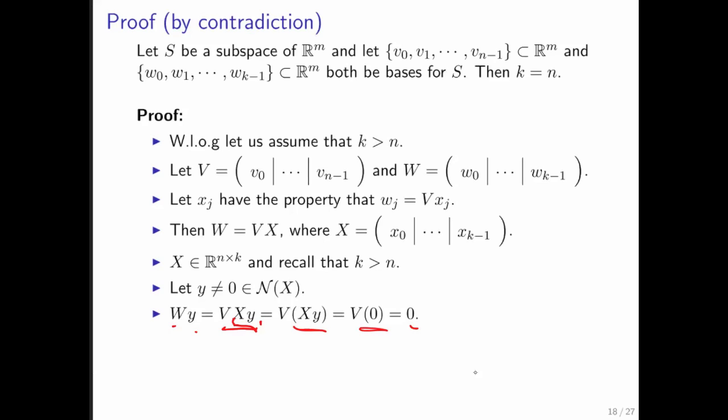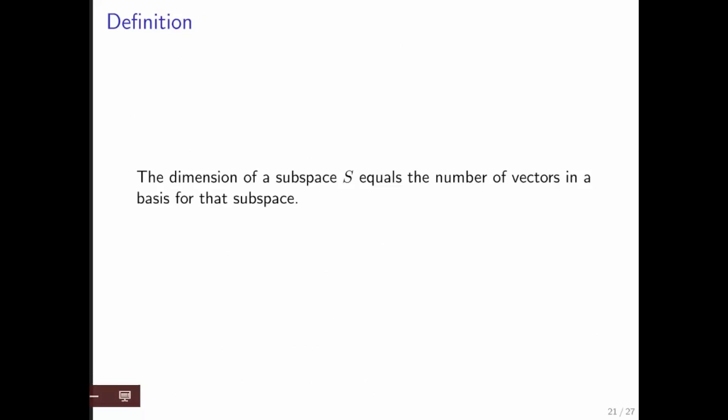But what does that mean? That means W has a nonzero vector in its null space, which means these vectors cannot be linearly independent. That contradicts the fact that those vectors form a basis for S.